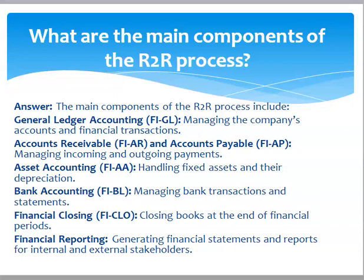What are the main components of the R2R process? Answer: The main components of the R2R process include general ledger accounting — managing the company's accounts and financial transactions; accounts receivable and accounts payable — managing incoming and outgoing payments; asset accounting — handling fixed assets and their depreciation; bank accounting — managing bank transactions and statements; financial closing — closing books at the end of financial periods; and financial reporting — generating financial statements and reports for internal and external stakeholders.